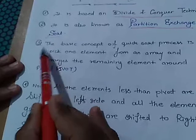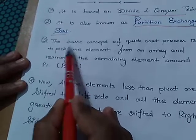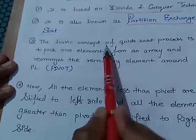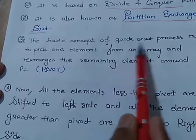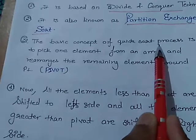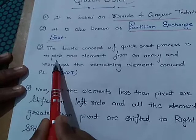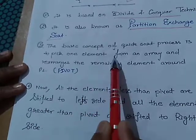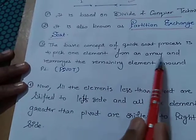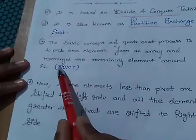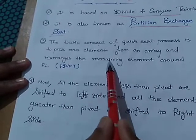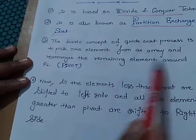Point number three: the basic concept of quick sort process is to pick one element from an array and rearrange the remaining elements around the pivot.